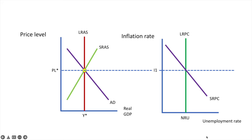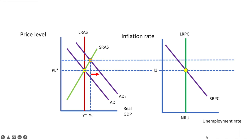To make it easier to follow, I'll use the same colour dots to indicate relationships. As a result of the increase in aggregate demand from AD to AD1, output rises from Y-star to Y1 and unemployment falls. The price level increases from PL-star to PL-1. We take this across to the Phillips Curve as well for an inflation rate of I2.